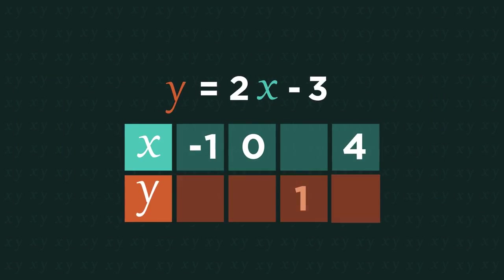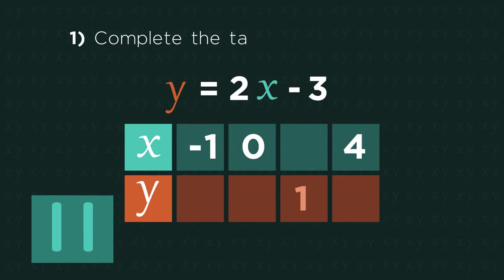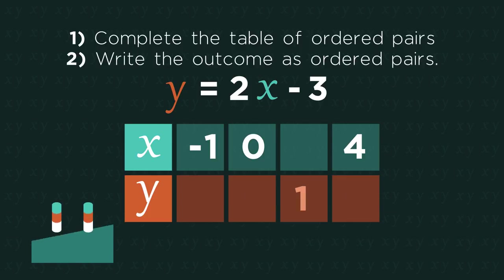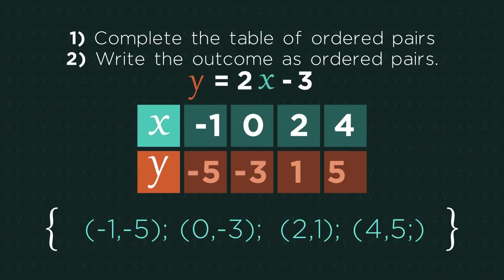So sometimes you might be given a mixture of x and y values and have to work out the missing values. Pause the video and complete the table of ordered pairs, and then write the outcome as ordered pairs. Did you get them right?